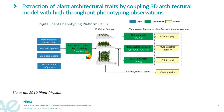Thousands of canopies can easily be generated in D3P by perturbing the inputs of the model, including the meteorological conditions, the crop management parameters, and the crop parameters.